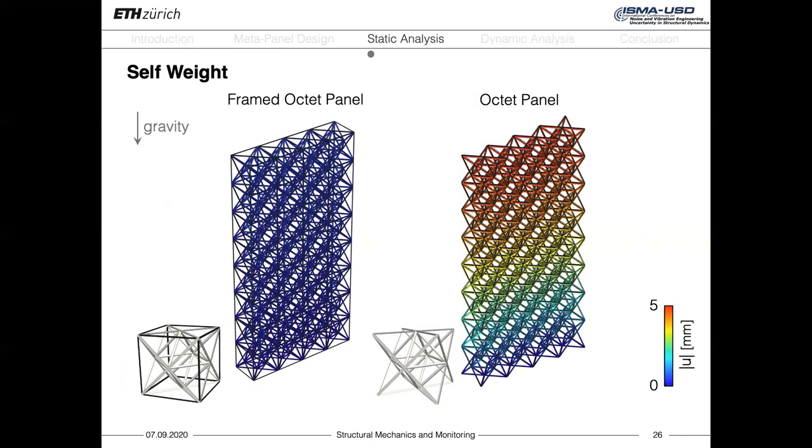To prove the added value of the external frame, we performed static analysis. We compared two panels, the one on your left obtained from the framed octet cell, and the one on the right from the periodic repetition of a simple octet. We consider only the weight of the structures themselves, and we compute the vertical displacements. We can see from the color scale that the addition of the frame ensures a higher vertical stability and minor sag compared to the panel made of simple elastomeric octets, which is instead characterized by a maximum vertical displacement of approximately 5 mm.